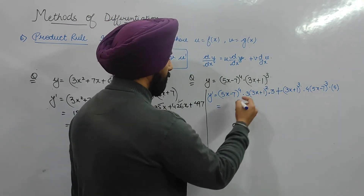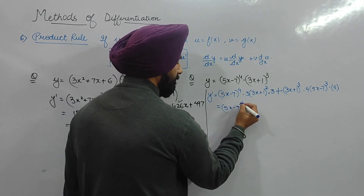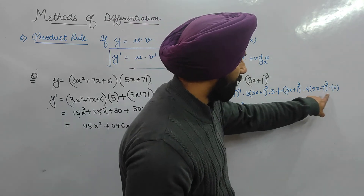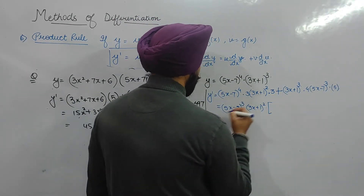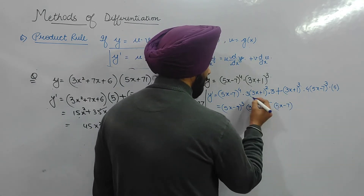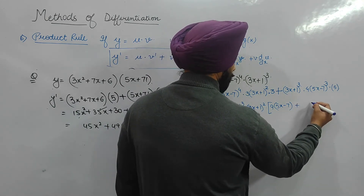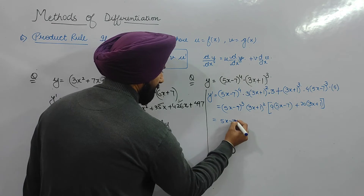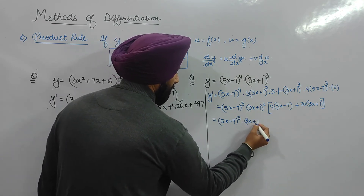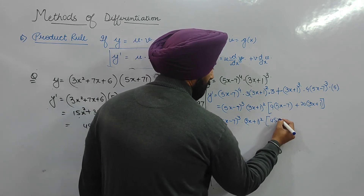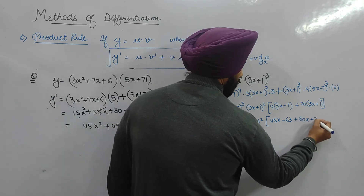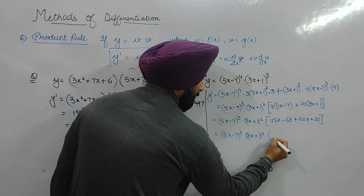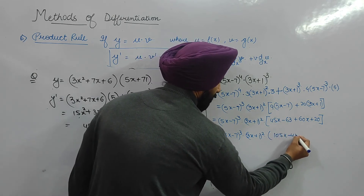We take out the common factor (5x − 7)³. After factoring and simplifying: (5x − 7)³ · (3x + 1)² · (45x − 63 + 60x + 20), which leads to (5x − 7)³ · (3x + 1)² · (105x − 43). That is the final answer.